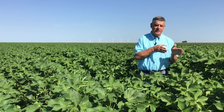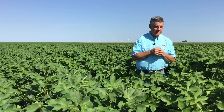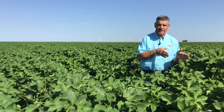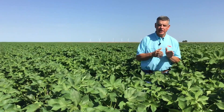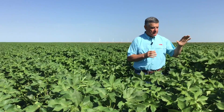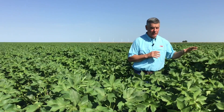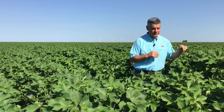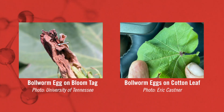Treating on an egg threshold not only allows you to get ahead of the pest and minimize damage, but there's peace of mind in knowing you have extended residual protection ahead of the pest attacking your crop. The threshold on BT cotton is 20% eggs — pretty much accepted across the cotton belt — meaning 20 plants out of 100 have at least one bullworm egg on them, and that triggers the application.